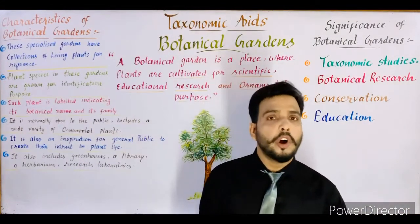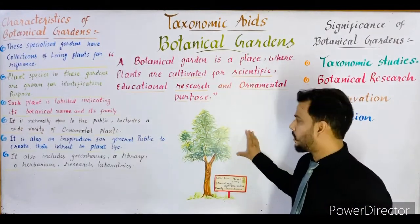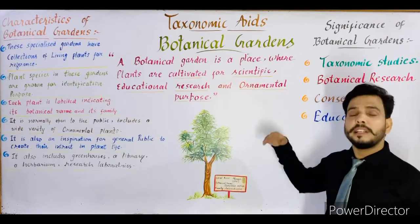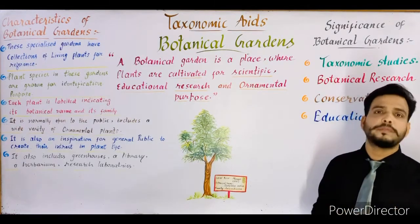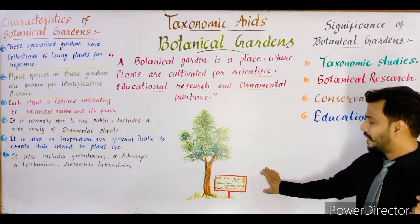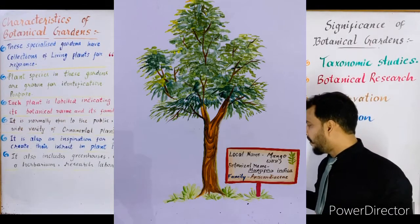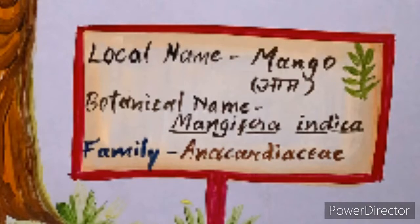In a botanical garden, plants may be ornamental, medicinal, or rare species. Each plant has a tag or label just below it, on which the local name, the botanical or scientific name, and the family of the plant are mentioned. For example, for a mango tree: the local name is mango or 'aam' in Hindi, the botanical name is Mangifera indica, and the family is Anacardiaceae.